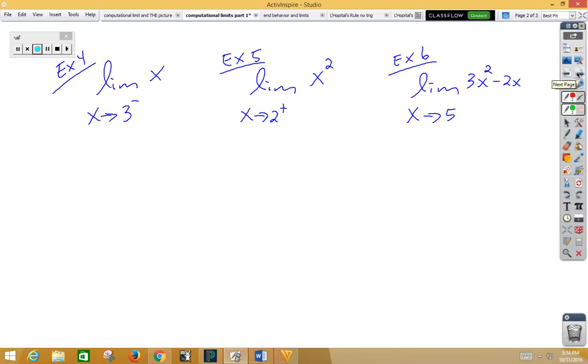In example four, our function has now changed from a constant function to the function x. So once we're no longer dealing with a constant, the first thing we always try with computational limits is we simply try plugging in our x value to see if we get a y value out. It does not matter which direction we're approaching if we get a good answer. If I plug in a three, we would simply get three. Three is a valid and good answer, so we are done.